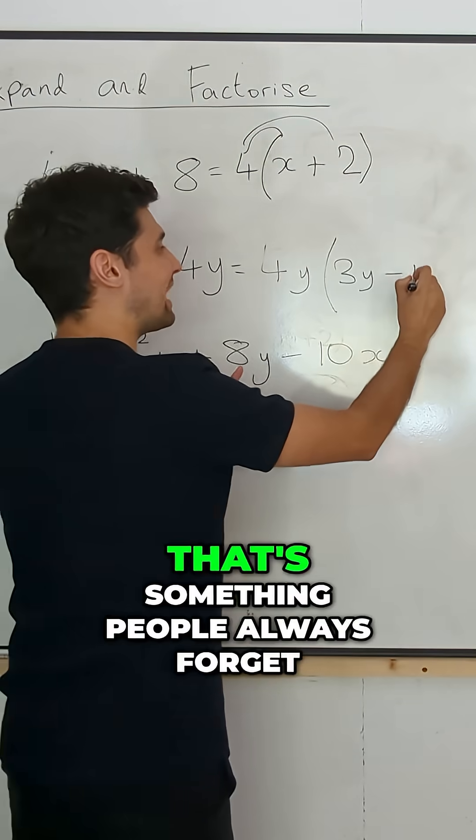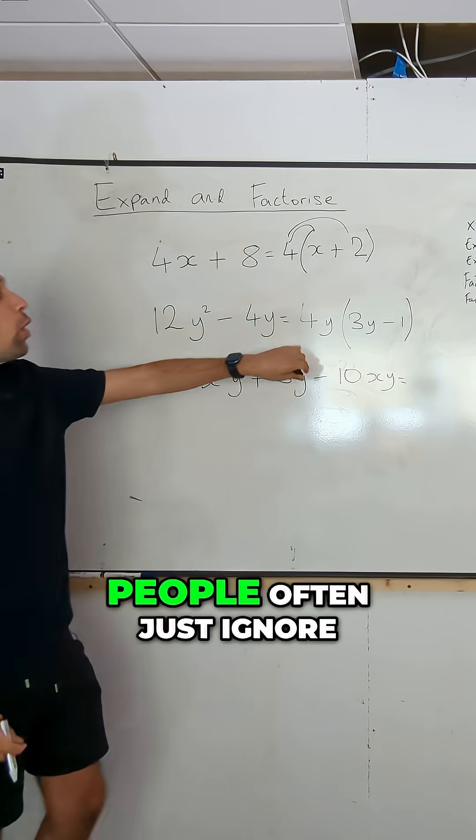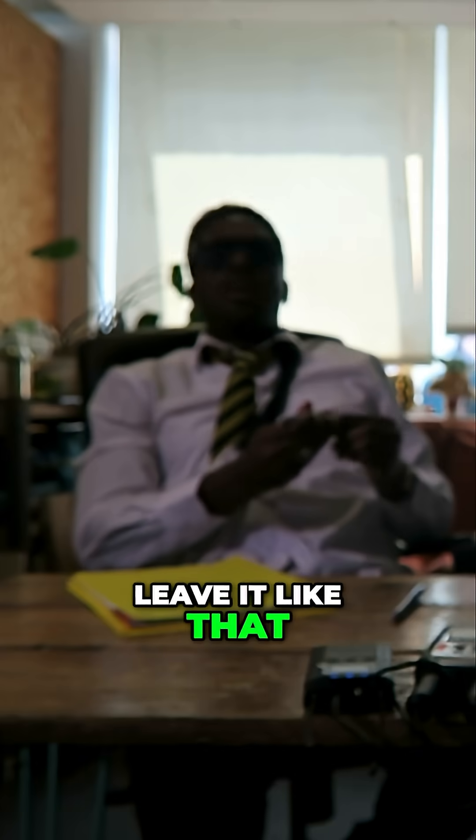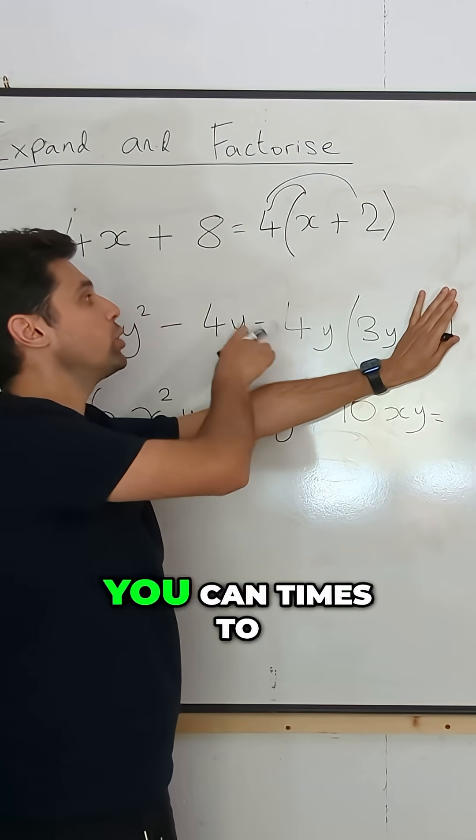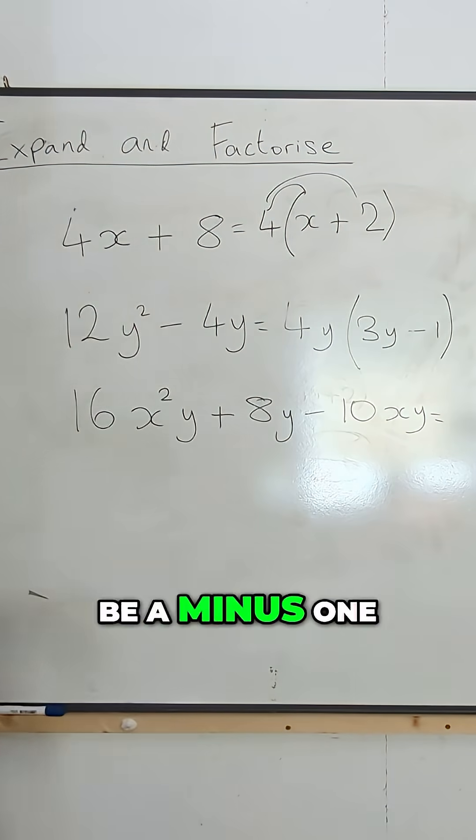Minus one, exactly. And that's something people always forget. People often just ignore this and they just leave it like that, but you need to have something there so you can times to get the four. One. It's gonna be a minus one. Very good.